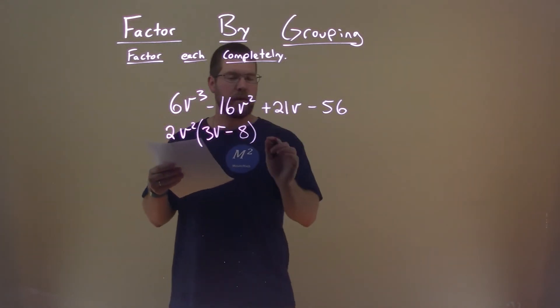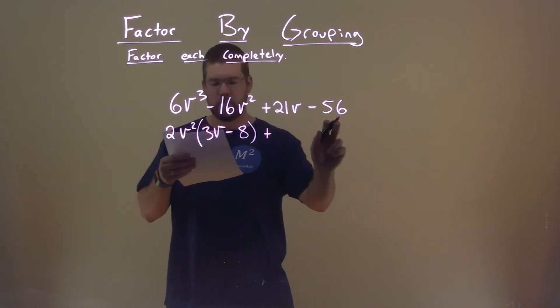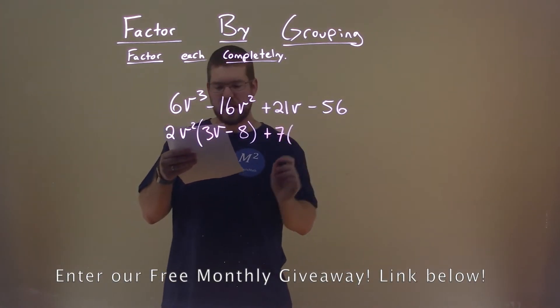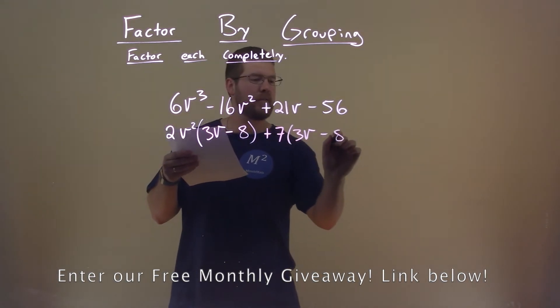Now let's do the same thing with the second part right here. What is in both parts that are the same? They both have 7 in it. So if we pull out a 7, we're left with a 3v and then a -8.